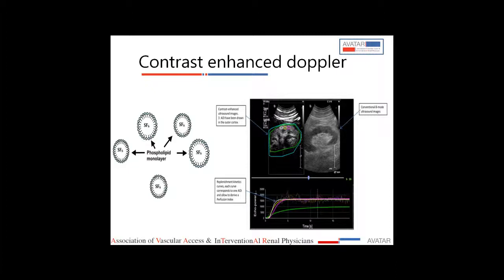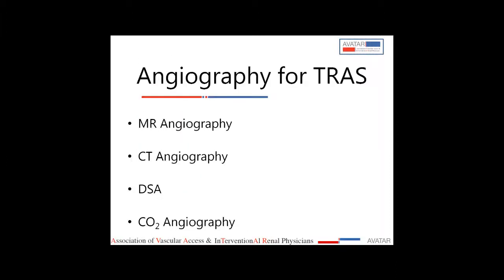In these situations, CT or MR angiography is performed. If the centre has contrast-enhanced Doppler facility — where microbubbles are injected into the circulation and vessels are imaged under Doppler guidance — this can be used instead. The advantage of contrast-enhanced Doppler is that it is not operator-dependent, does not require direct visualization of the renal artery stenosis, and provides information on both total and regional graft flow.